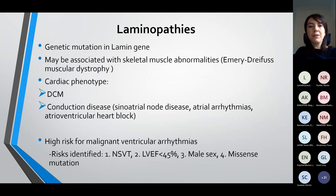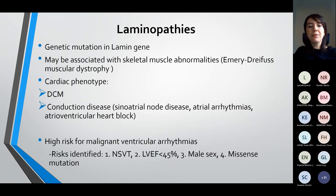Another specific example of dilated cardiomyopathy is those with a lamin gene mutation — the group of patients with laminopathy. This is often associated with skeletal muscle abnormalities, in particular Emery-Dreifuss muscular dystrophy. The cardiac phenotype is dilated cardiomyopathy but also conduction disease with high-degree AV block and sinoatrial node disease. These patients are at very high risk for malignant arrhythmias; risks identified are non-sustained VT, low ejection fraction, male sex, and a missense mutation. If more than two of these risk factors are present, ICD insertion would be considered.